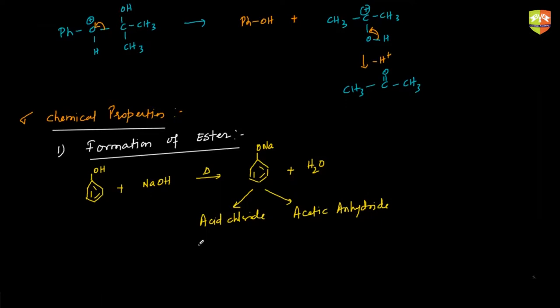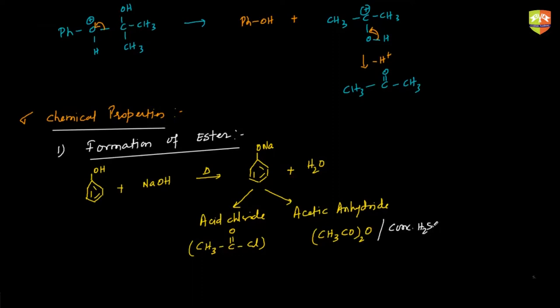Acid chloride is CH3-C(=O)-Cl, and anhydride is (CH3CO)2O. The reaction with anhydride takes place in acetic medium using concentrated H2SO4. For the reaction with acid chloride, the solvent used is pyridine.